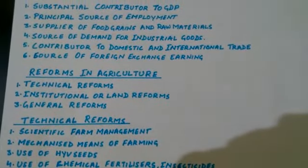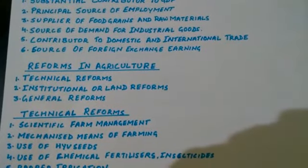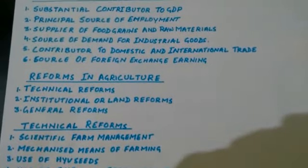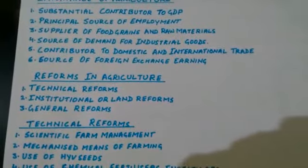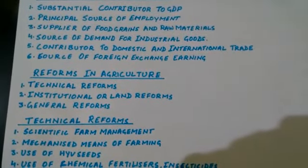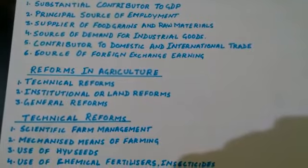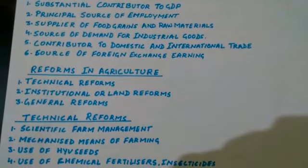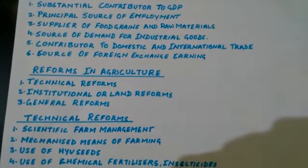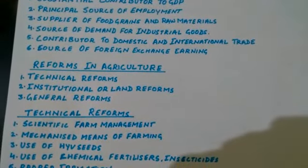Next, the importance is that agriculture is the source of demand for industrial goods — goods needed in agriculture such as tractors, threshers and other machines, as well as HYV seeds and fertilizers.